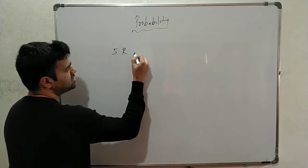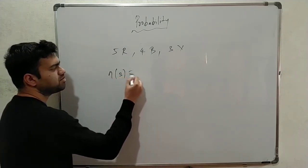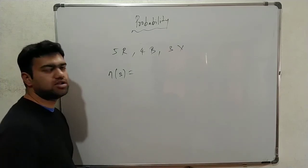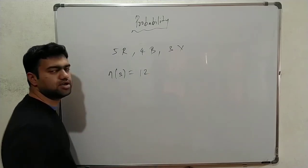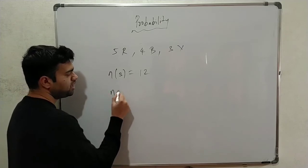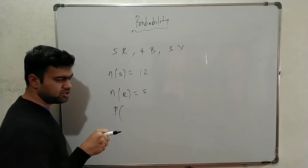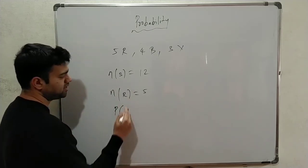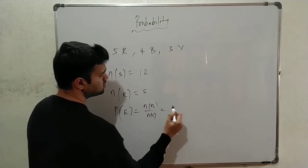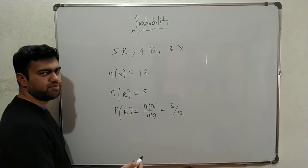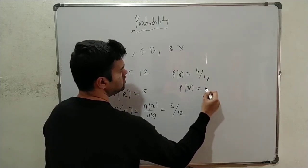Another example with balls: a bag has 5 red balls, 4 blue balls, and 3 yellow balls. The sample space is the total number of balls in the bag — 5 plus 4 is 9, plus 3 is 12, so total 12 balls. The probability of getting a red ball is n(E) by n(S), which is 5 by 12. The probability of getting a blue ball is 4 by 12, and the probability of getting a yellow ball is 3 by 12.